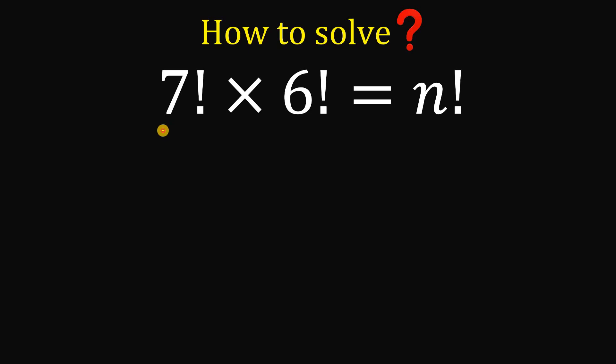Alright, so given this equation — 7 factorial multiplied by 6 factorial equals n factorial — our goal is to solve for the value of the variable n.